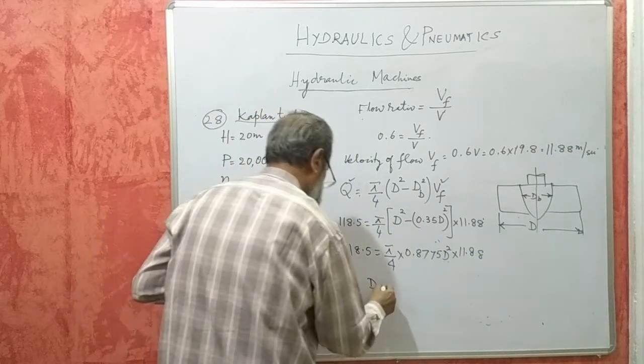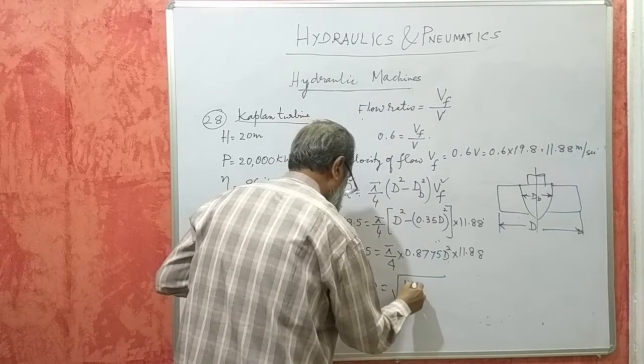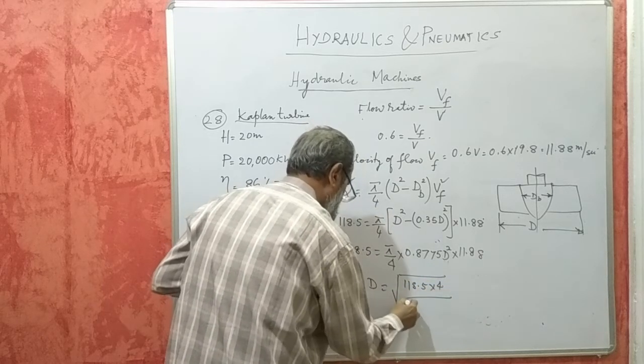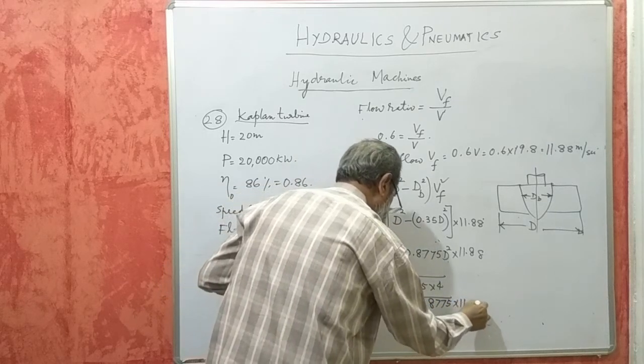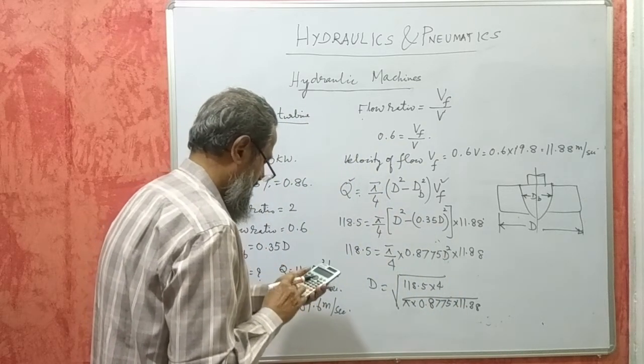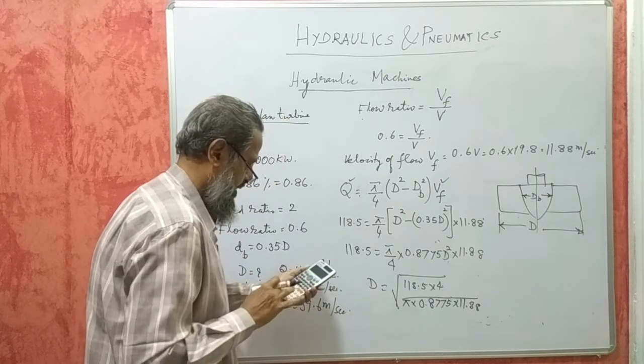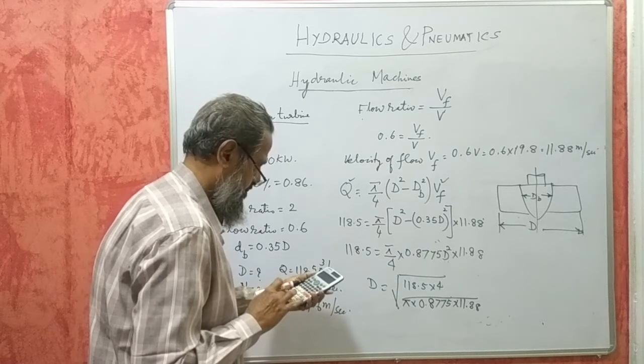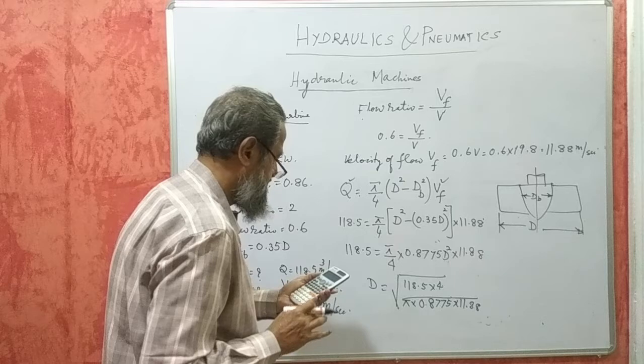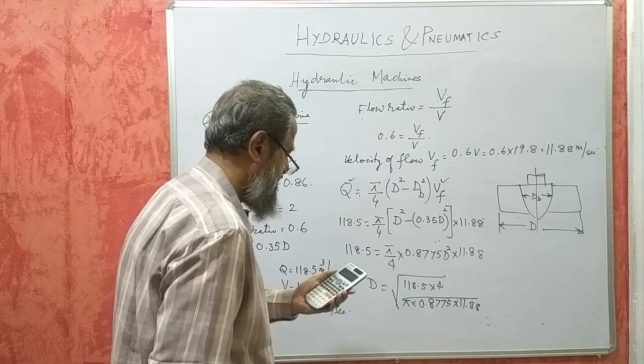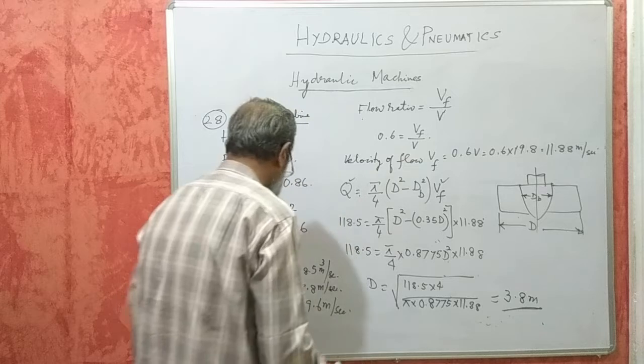So capital D, that is the diameter of the runner we want, d will be equal to under square root 118.5 into 4 divided by pi into 0.875 into 11.88. That will be 3.8 meters. This is the diameter of the runner.